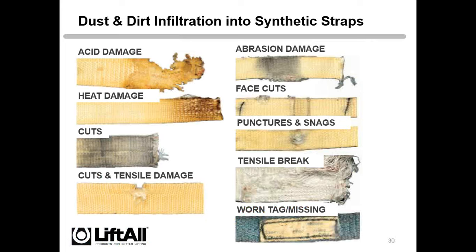Tie-downs can be used in two ways: attached to the cargo or passed over the cargo. When using tie-downs, make sure that if your load is sitting on cribbing — four-by-fours or two-by-fours — the tie-downs go over or at least above the cribbing. If you put the tie-downs in the middle, you're actually going to start to bend the load. If the load is not strong enough to absorb that, it will potentially break or bend, and your customer will not be happy.